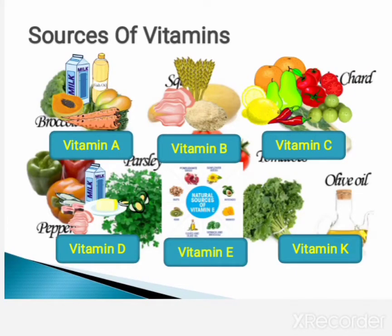Vitamin A is present in various animal sources such as egg, butter, ghee, milk, etc. Plant sources rich in vitamin A are carrots, tomatoes, papaya, mango, guava, and leafy vegetables.